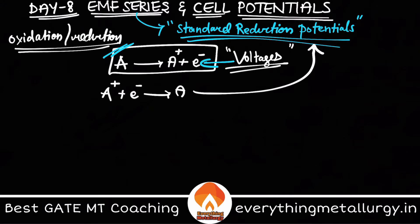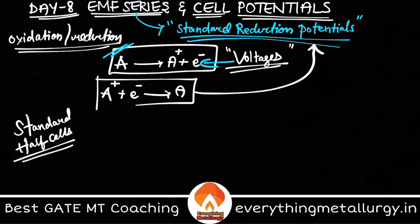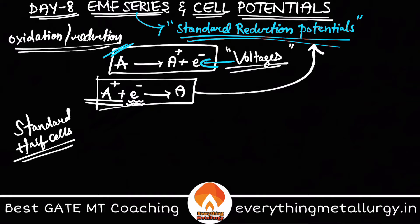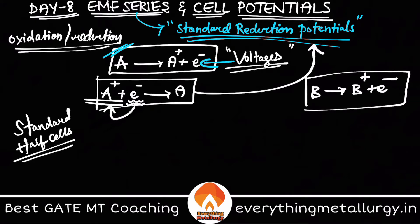Before going to that, I just want to tell you how these are basically calculated. We have something called standard half cells. If you take this particular reaction, it is not a complete reaction — the electron here should come from something else. Let me take B plus e minus; this electron reacting with the ion is coming from another reaction. These are two different individual half reactions.